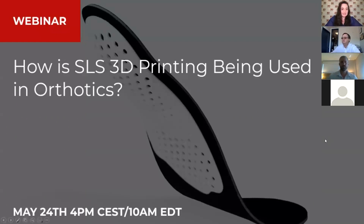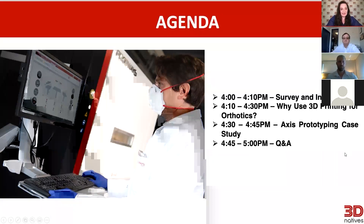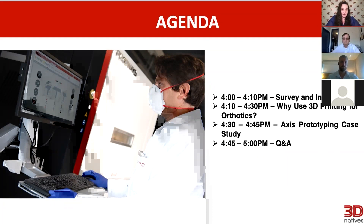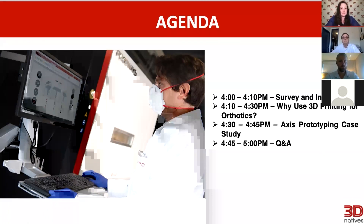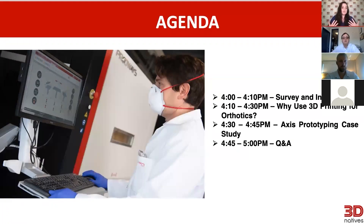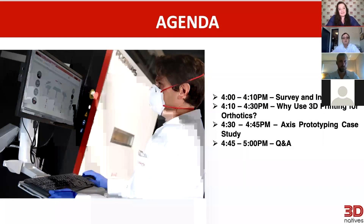After this introduction, we will go straight into the question: why should you be using 3D printing, and especially SLS 3D printing, for the production of orthotics? After that, we will take a closer look at the case study from Access Prototyping and Prodways, which is an actual orthotic that has been created, so you can see how the technology can be used and what its benefits are. We will end with the Q&A section.